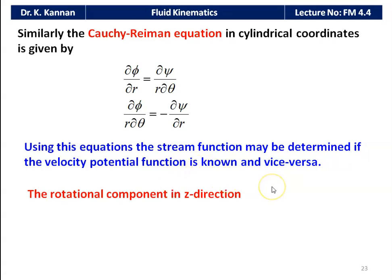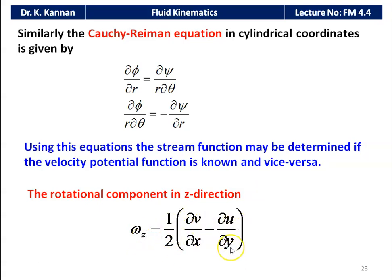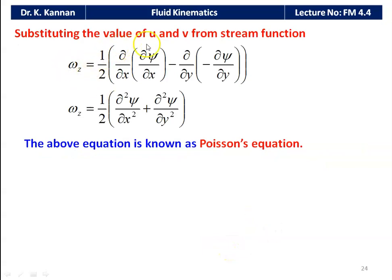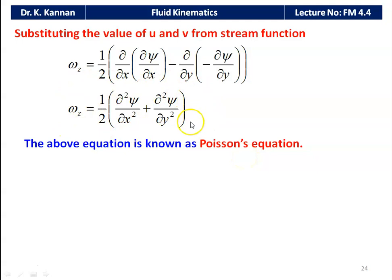The rotational component in the z-direction is given by ω_z = (1/2)(∂v/∂x − ∂u/∂y). Substituting the values of u and v from the stream function, ω_z = (1/2)(∂²ψ/∂x² + ∂²ψ/∂y²). This equation is called the Poisson equation for a two-dimensional flow field.